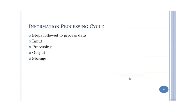Now let's see what is an information processing cycle. The information processing cycle is the sequence of steps followed by a computer to process data. These steps are: number one input, number two processing, number three output, and number four storage.